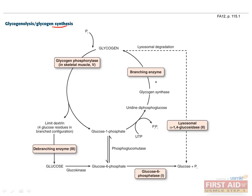This diagram shows the synthesis and degradation of glycogen in a different way. Again, glucose-6-phosphate is converted to glucose-1-phosphate and then UDP-glucose. With the help of glycogen synthase and branching enzyme, this is used to make glycogen. Then both glycogen phosphorylase and de-branching enzyme convert it back into glucose. Glycogen can also be degraded in lysosomes, requiring the enzyme lysosomal alpha-1,4-glucosidase, also known as acid maltase, which can only break apart 1-4 linkages.